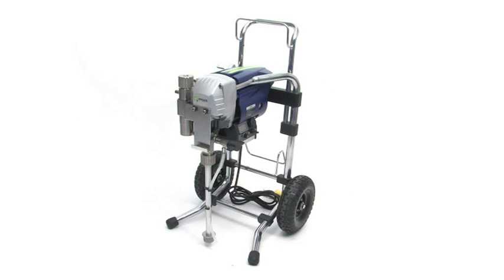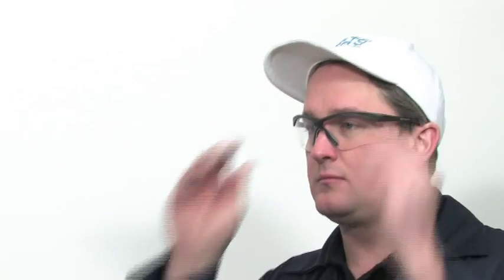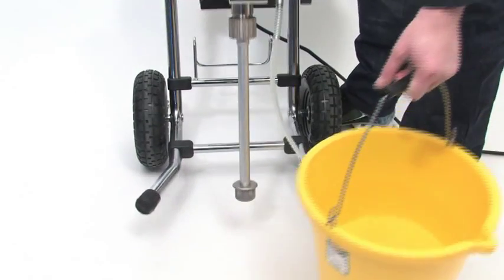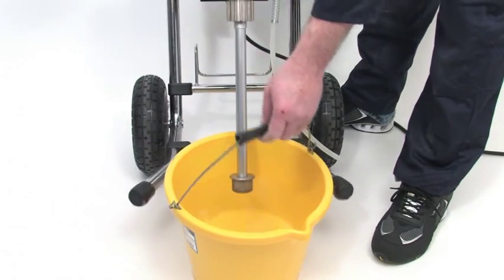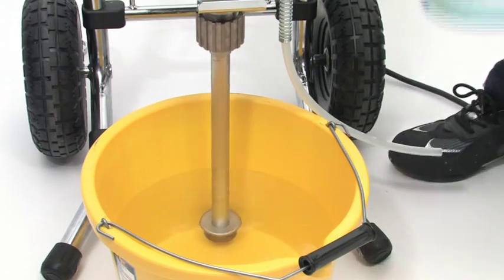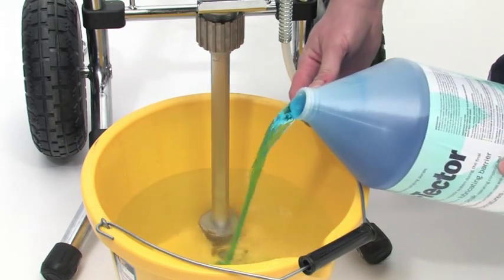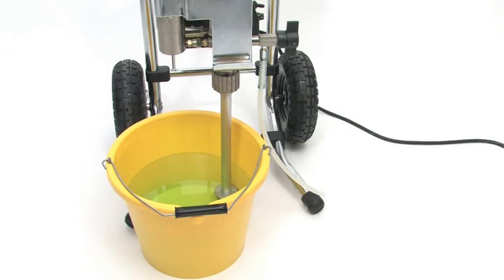Because your sprayer is brand new, we recommend flushing it through with water first. Make sure to put on your safety glasses before starting. Depending on which model of Q-TEC sprayer you have purchased, submerge the suction and cleaning tubes into a bucket of clean water. Make sure you add a small amount of Q-TEC pump conditioner before starting.